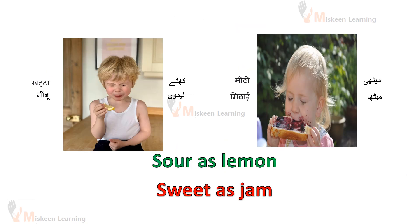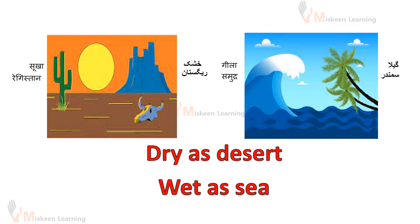Sour as lemon — nimbo ki tira, khatta. Sweet as jam — aur jam ki tira, meetha meetha. Yahaan per hum kis cheese ka comparison kerrehe hai? Taste ka, swad ka, zai ke ka — we are comparing taste here.